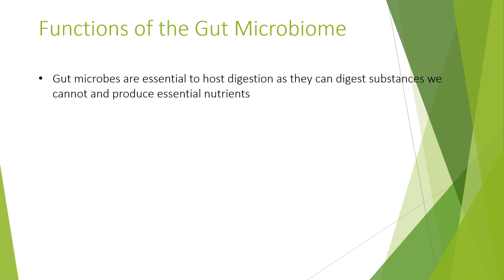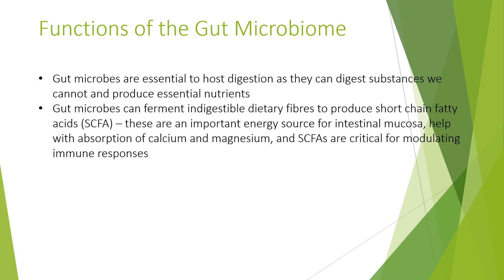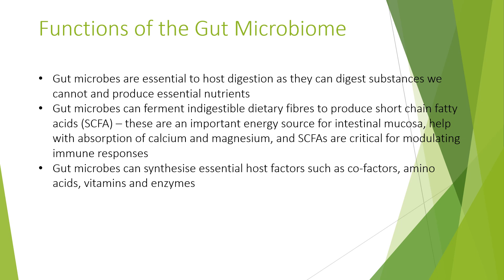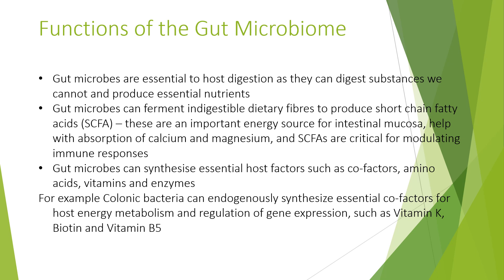Gut microbes are essential to host digestion as they can digest substances we cannot and produce essential nutrients. Gut microbes can ferment indigestible dietary fibres to produce short-chain fatty acids, which are a potent energy source for intestinal mucosa, help with the absorption of calcium and magnesium, and are critical for modulating immune responses. Gut microbes can also synthesise essential host factors such as cofactors, amino acids, vitamins, and enzymes. For example, colonic bacteria can endogenously synthesise essential cofactors for host energy metabolism — such as vitamin K, biotin, and vitamin B5 — through regulation of gene expression. Vitamin K is a fat-soluble vitamin needed by the liver to make clotting factors. Bacteria make half our daily allowance of vitamin K. Biotin is needed for glucose metabolism. Vitamin B5 is involved in manufacturing steroid hormones, and bacteria also make oral biotin and vitamin B5.